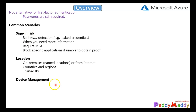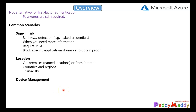Another common scenario is device management. If the user is coming from a corporate device — a company-owned device — we might not need to validate multi-factor authentication and can simply allow the application. But if the user is coming from a bring-your-own device, we can configure conditions to block or require one more layer of security to grant access for those applications.